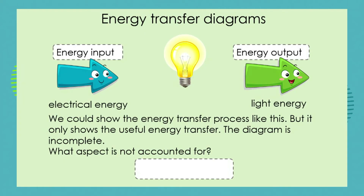When we have an energy transfer system — for example, a simple light bulb — we could show the energy transfer process like this: energy input is the electrical energy, and the energy output is the light energy. But this only shows our useful energy transfer. The diagram as it stands is incomplete. Can you look at it and tell me what aspect is not accounted for?